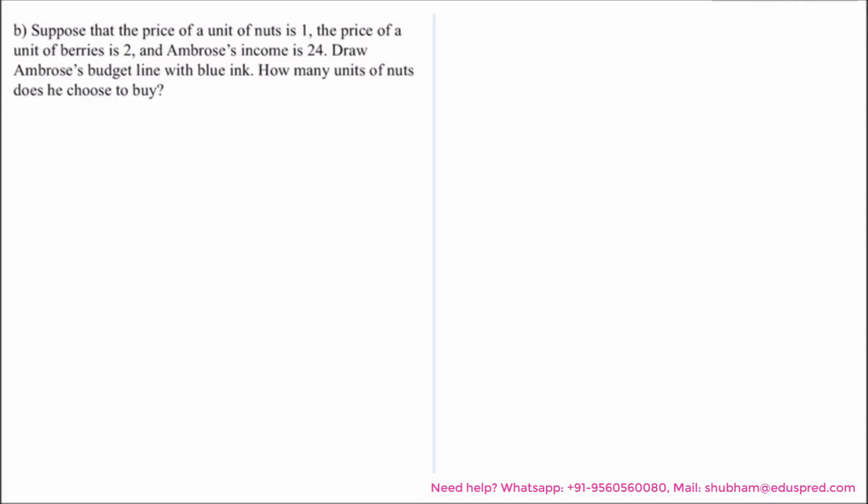In the previous part, we know X1 represented units of nuts consumed by Ambrose. X2 represented the units of berries consumed by Ambrose.